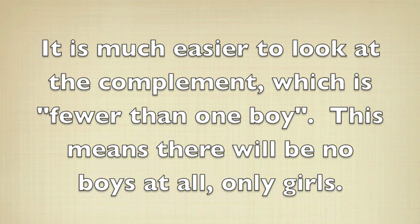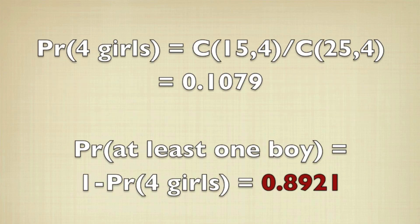The number of groups that only have girls is going to be C(15,4). The probability that we're going to have exactly four girls is going to be the quotient then, or about 11%. That means the probability of at least one boy, which is the complement, is one minus that probability, or 0.8921, about 89%.